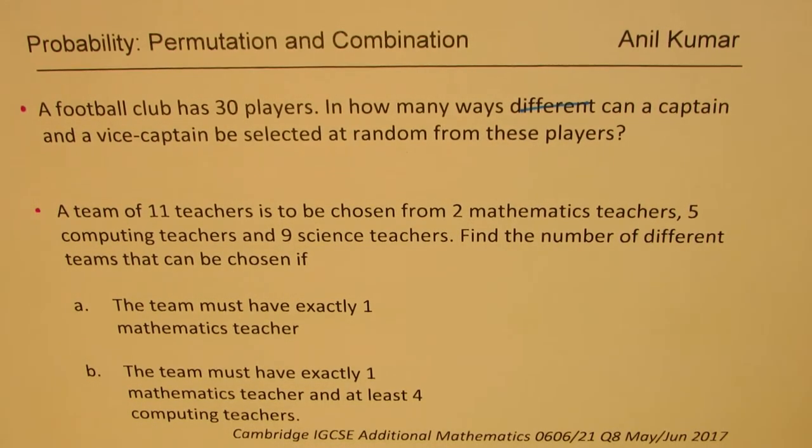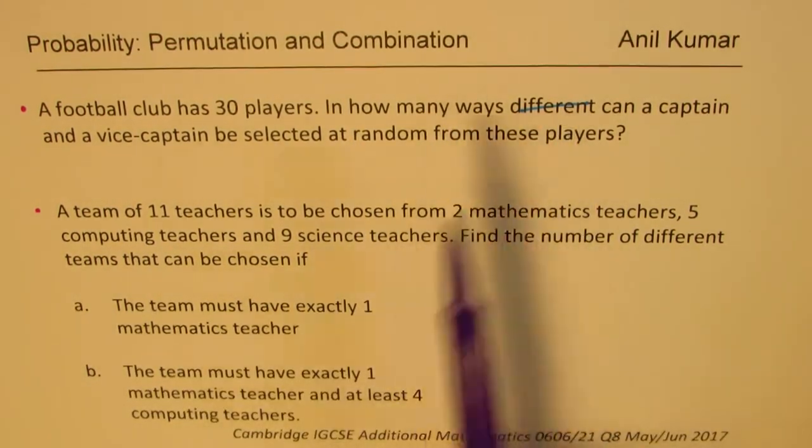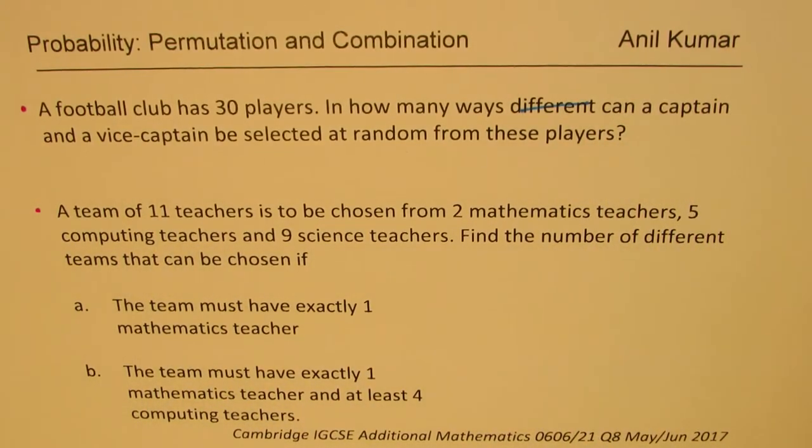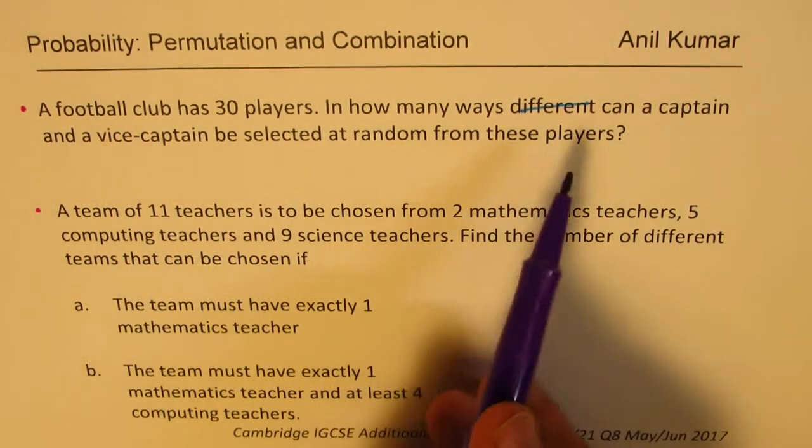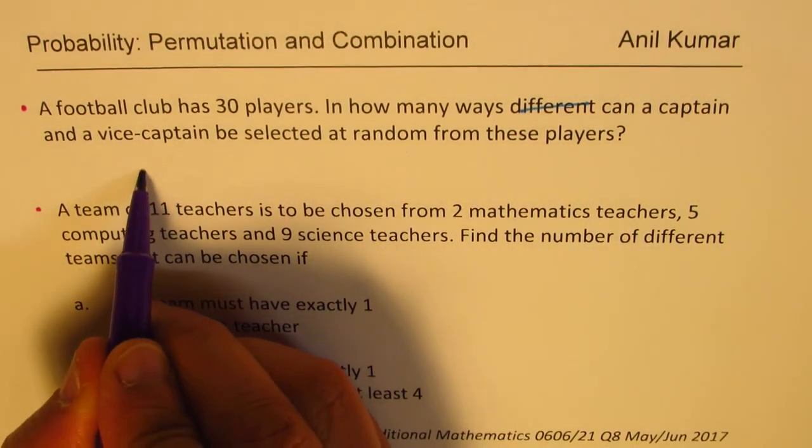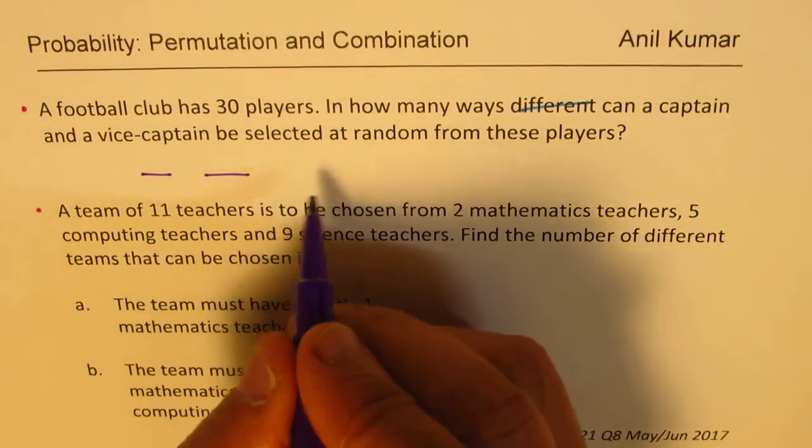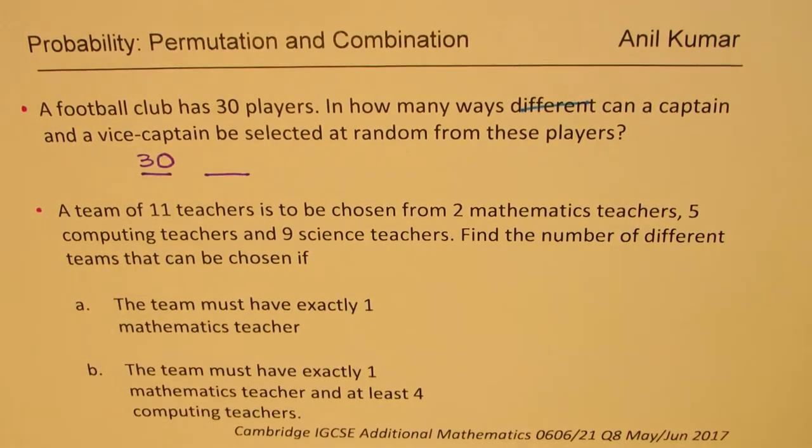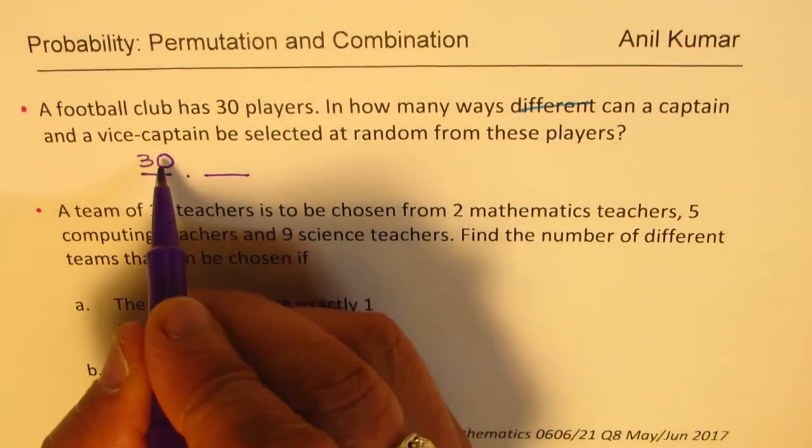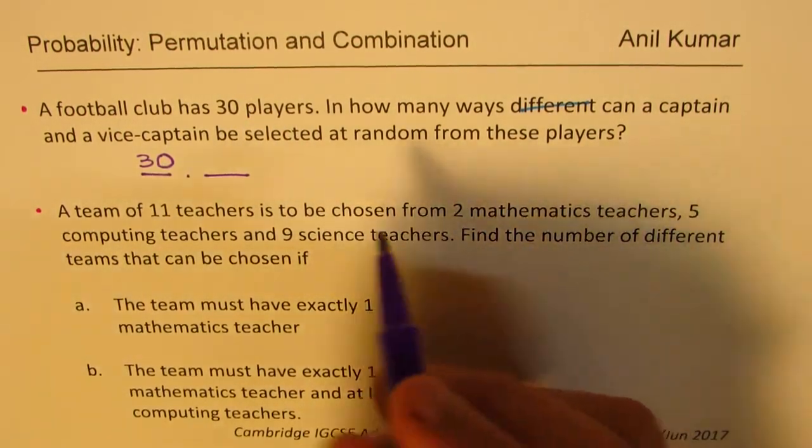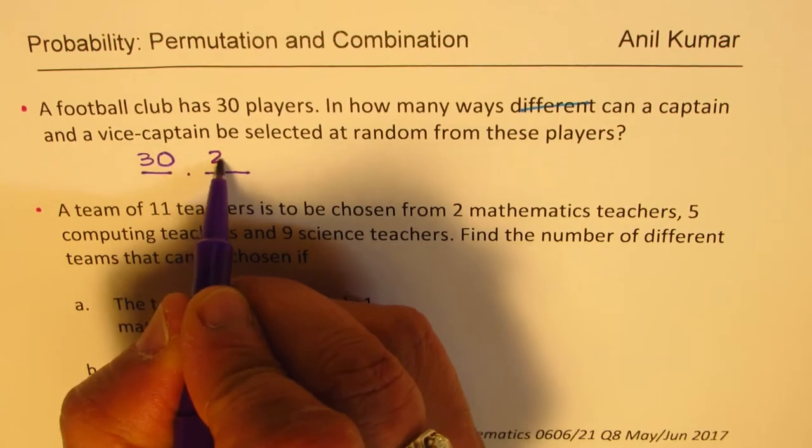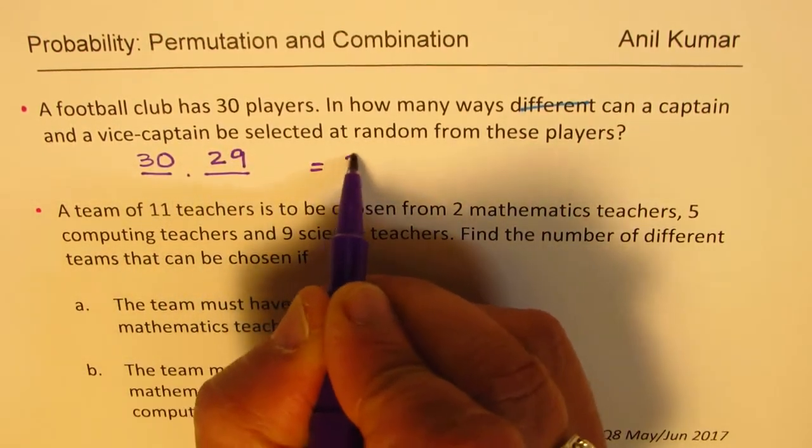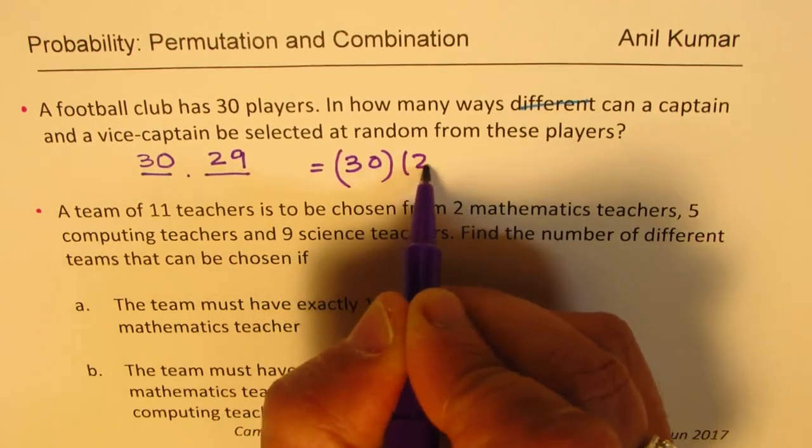Question number one, a football club has 30 players, in how many different ways can a captain and vice-captain be selected at random? These two are distinct identities, so we'll use permutation here. 30 players, you could select any one of them, so you have a choice of 30, and then once one of them has been selected as captain, you are left with 29, and therefore the answer should be 30 times 29. That is one way of doing it.